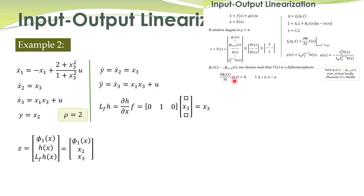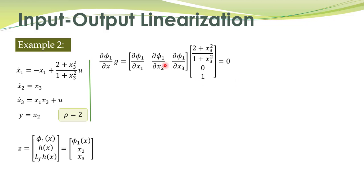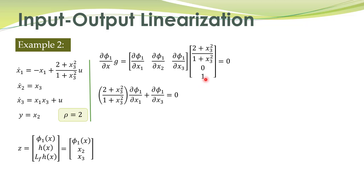The condition is: the partial derivative of phi_1 with respect to x, multiplied by g, must equal zero. The partial derivative of phi_1 with respect to x is written out, and g is the control vector — with zeros where there is no direct control input and 1 where u appears. After multiplication we obtain a partial differential equation which we must solve to find phi_1(x).